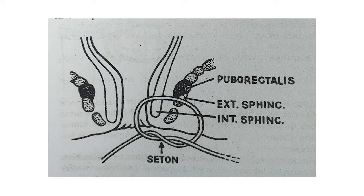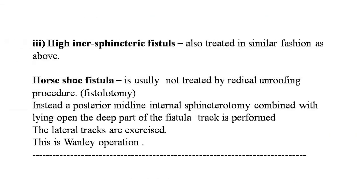Here is a picture showing use of the seton in a case of high fistula, with the puborectal muscle, external sphincter, and internal sphincter visible. There is minimal chance of cutting and incontinence. You can use seton or the ksha sutra, which has very great significance and gives good results. The intersphincteric fistula is also treated in a similar fashion as the transphincteric fistula.